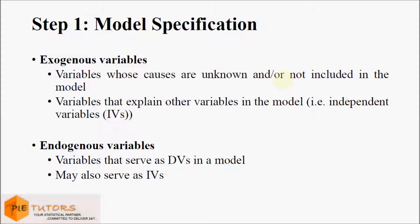Exogenous variables can be considered similar to the independent variables in regression analysis. These variables explain other variables in the model and their causes are either not known or not included in the model. The second type of variables are endogenous variables, which serve as dependent variables in the model but may also serve as independent variables.